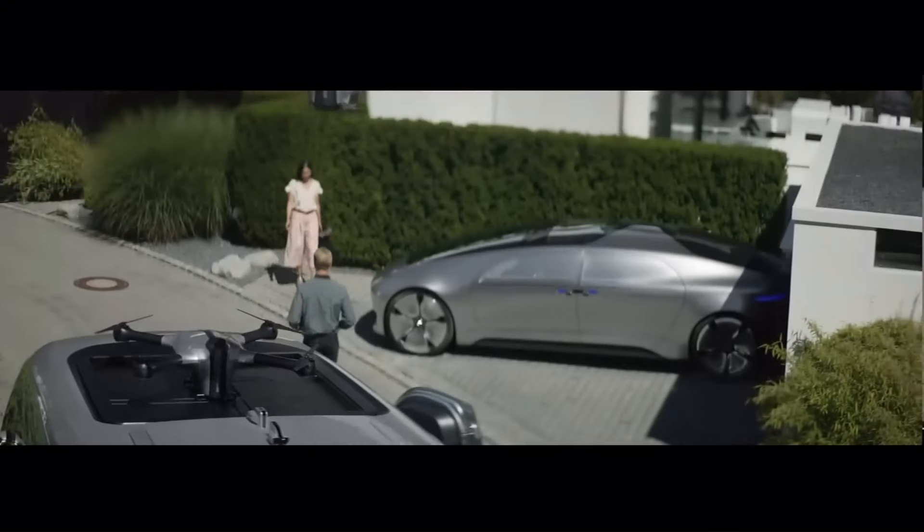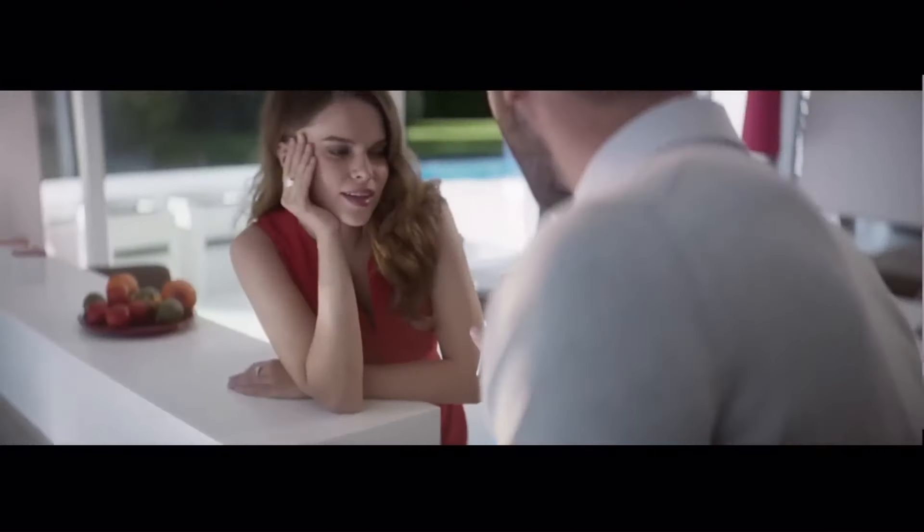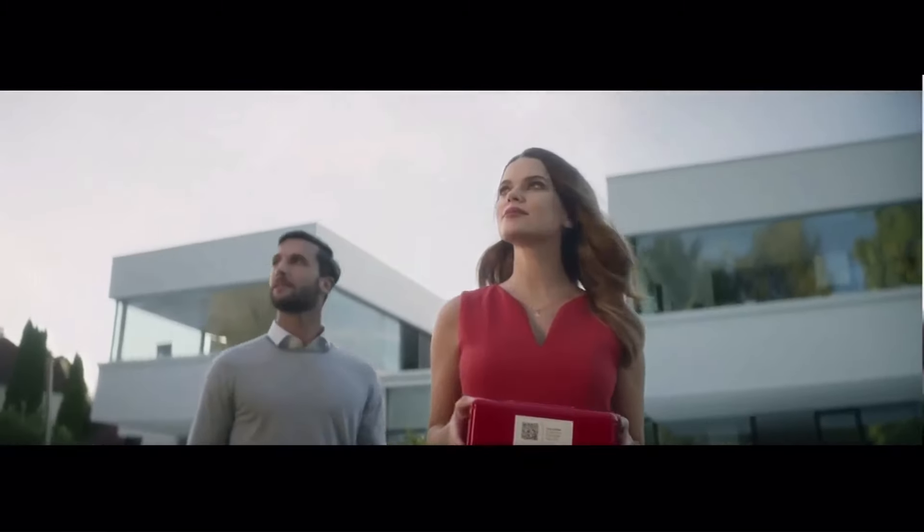Integrated Drones. The Vision Van features two roof-mounted drones that can be used to deliver packages to hard-to-reach areas or to customers who are not home. This can further improve delivery efficiency and convenience.